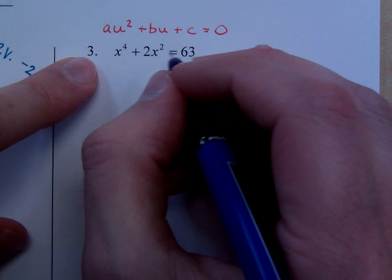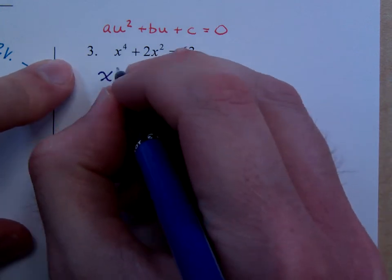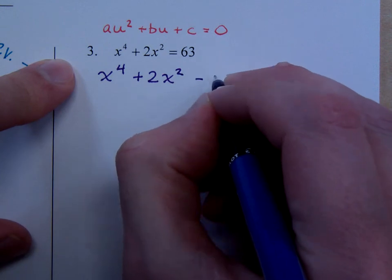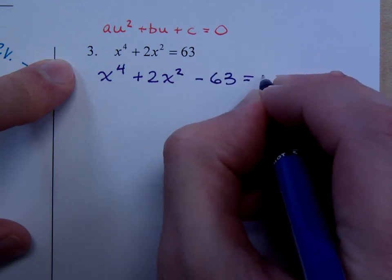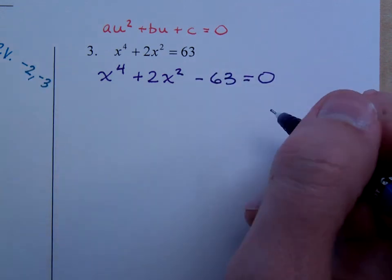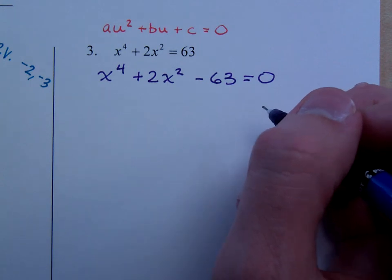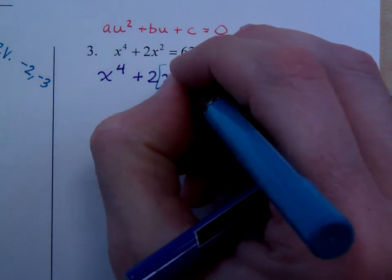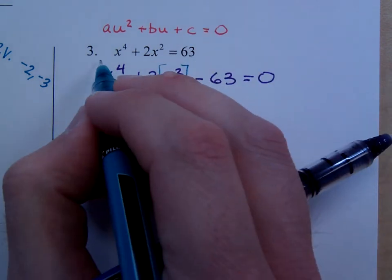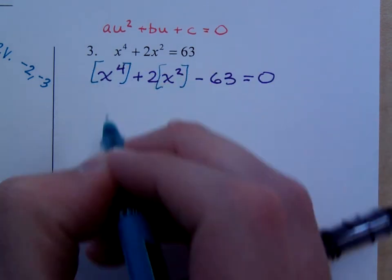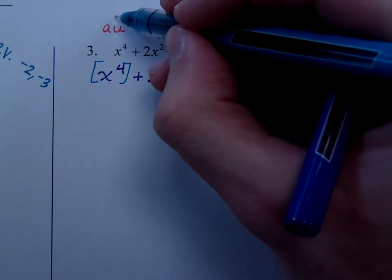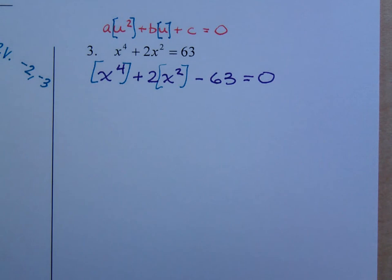This guy right here. Watch what happens if I move that 63 over to the left. This guy has a trinomial, and we factor trinomials. Notice that this is a constant, and this guy right here is, when you square it, that guy. And that's the pattern that we see here with things that are quadratic in nature.